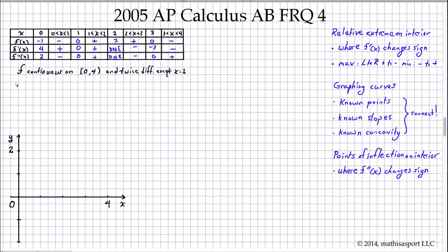Let's go to Part A. What we're looking for are relative extrema over the interior points. Note that they aren't even asking about the endpoints, so that issue of whether there are relative extrema at the endpoints is moot. We just have to find whether it's a relative max or a relative min.